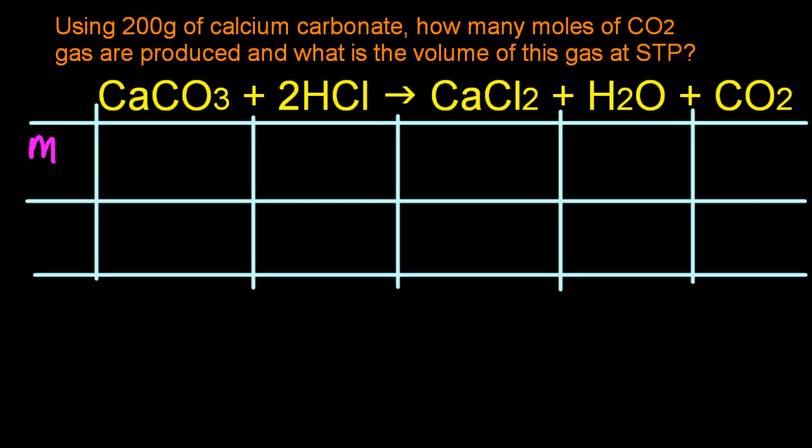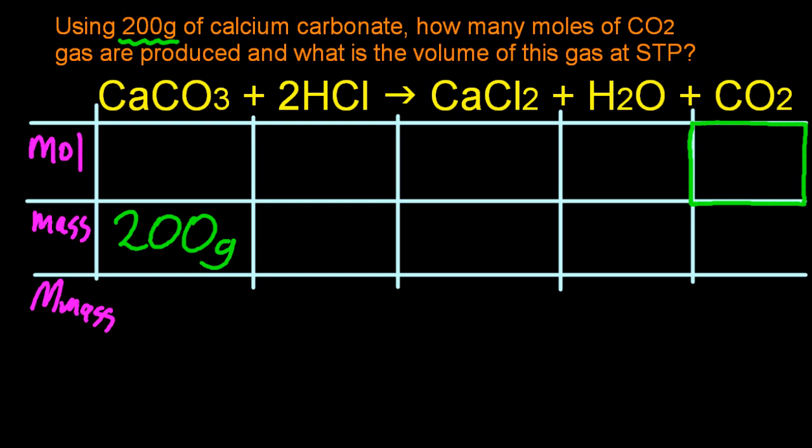So moles, mass, and molar mass. The IB likes calcium carbonate, so do I. Because 200 grams of calcium carbonate and a molar mass of 100 grams per mole for calcium carbonate. Well, that's convenient. That gives me moles is mass over molar mass. That gives me 2 moles of calcium carbonate.